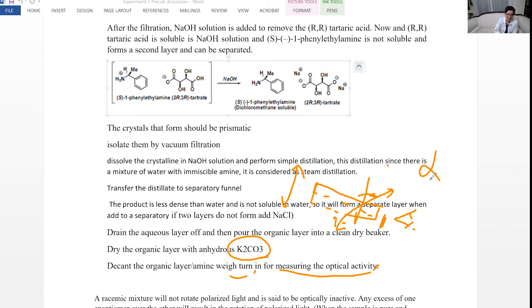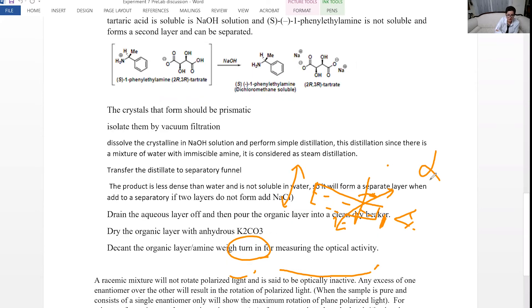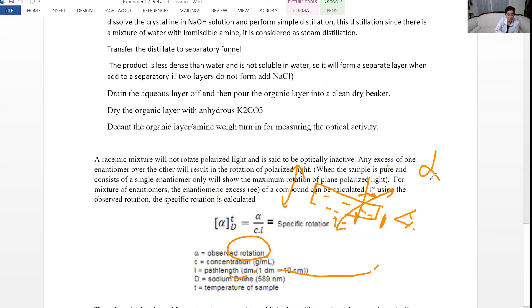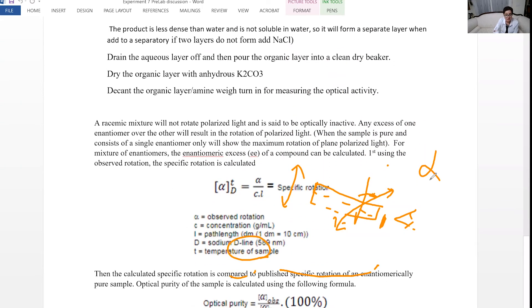If you have a racemic mixture, that means 50-50% mixture, the net rotation is going to be zero. That means a racemic mixture is optically inactive. 50% of the compound is going to rotate to the right side. The other 50% would rotate to the left side. Net result would be zero.